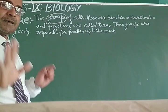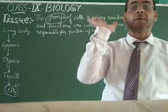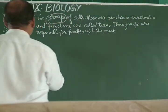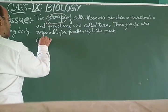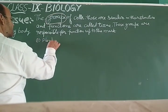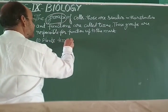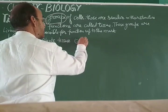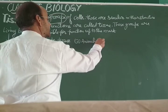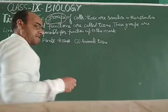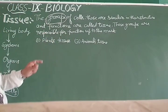So there is a need for tissue in the living organism. As far as the study of tissue is concerned, you have to classify it into two parts. They can be classified into plant tissue and animal tissue. You will study the plant tissue first, then after, you will study the animal tissue.